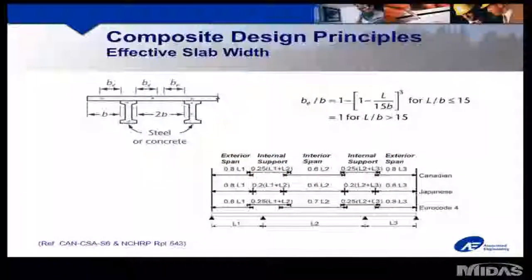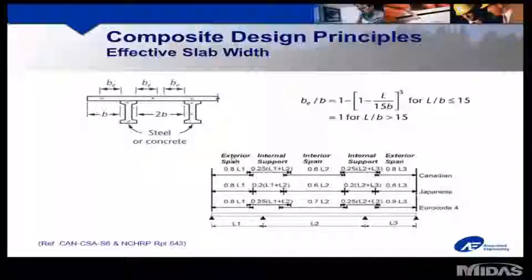Let us begin with a quick review of composite design principles. Here a superstructure section is shown with steel or concrete girders and an upper concrete slab. We need to determine how much of the slab is effective, because the stress lines in the slab converge towards the girders the closer you get to the supports. Each country's code provides a formula for the effective width in relation to the effective span. This lower diagram shows the definition of the effective span lengths for exterior spans, interior spans, and over the internal supports. It also shows that the Canadian and Eurocode assumptions are very similar.